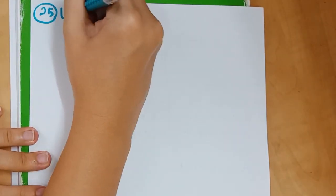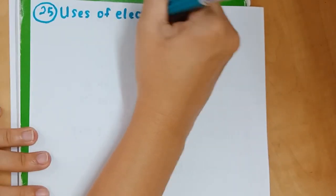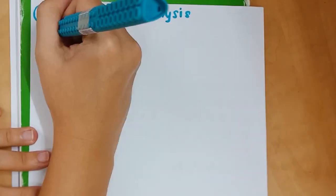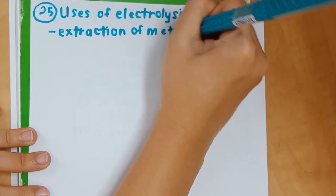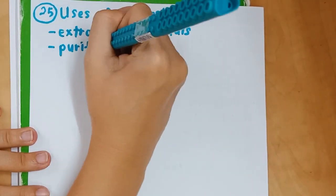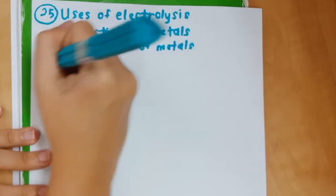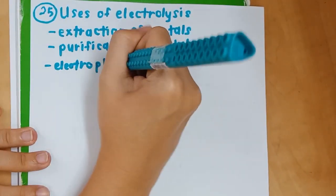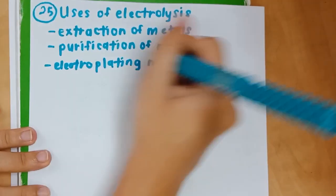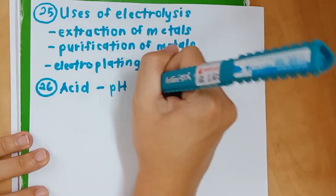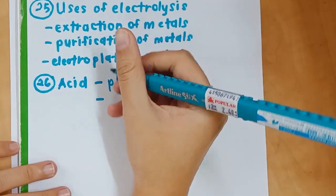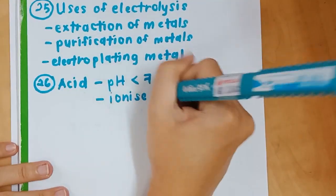Number 27: you need to know the uses of electrolytes. Obviously you need to know the process of electrolytes as well - that is another story - but the uses is very important as well. Electrolytes is used for the extraction of metals, purification of metals, and for electroplating metals. Number 26: acid.